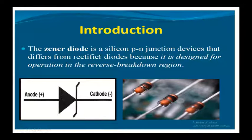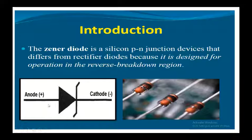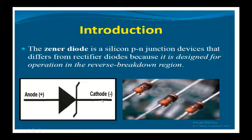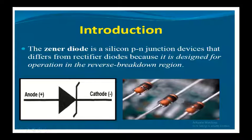We are going for the Zener diode, which is a silicon P-N junction device. This is the circuit symbol for a Zener diode — you can see the anode and the slanting line which indicates the cathode, that is the negative terminal. This is the manufactured silicon diode, which consists of a black ring, and this black ring indicates the cathode; the other terminal is the anode.